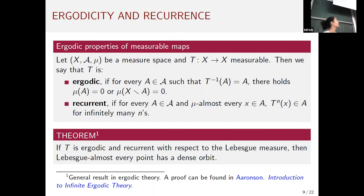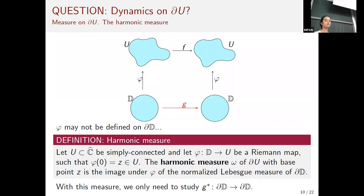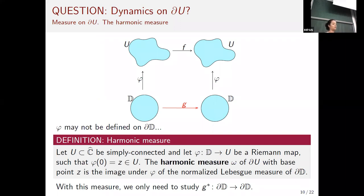To deal with φ, we consider on the boundary of U the harmonic measure, which is the image of the Lebesgue measure on the unit circle under the Riemann map φ. This does not depend on which Riemann map we choose, since all such harmonic measures are equivalent. The advantage is that we only need to study the boundary map g*, because if it is ergodic or recurrent, the same property holds for f on the boundary of U with respect to the harmonic measure.